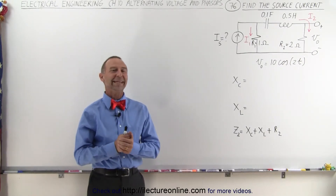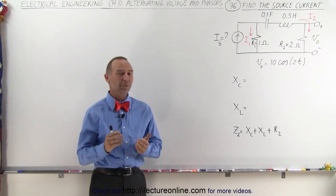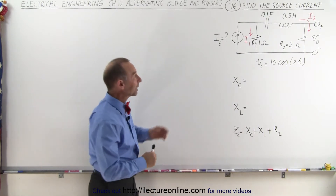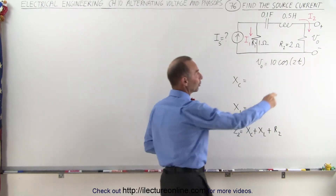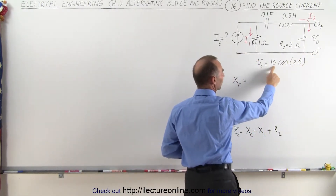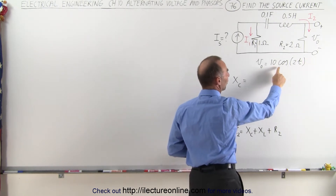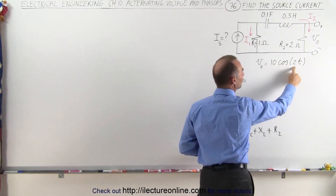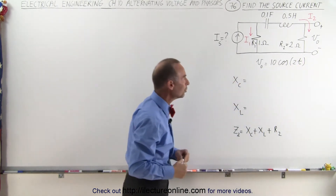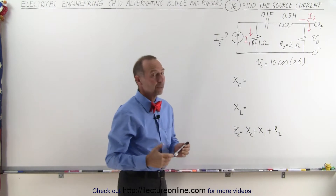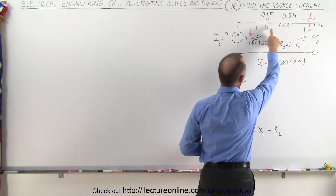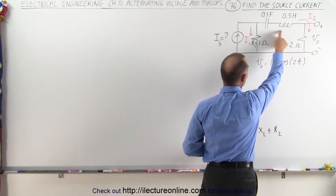Welcome to Electronline. In this example, we're going to try to find the source current when we're given the output voltage. The output voltage is defined by a voltage of 10 volts with a cosine of 2t, which means the angular frequency is 2. This means we need to find Xc and Xl for the capacitor and inductor.